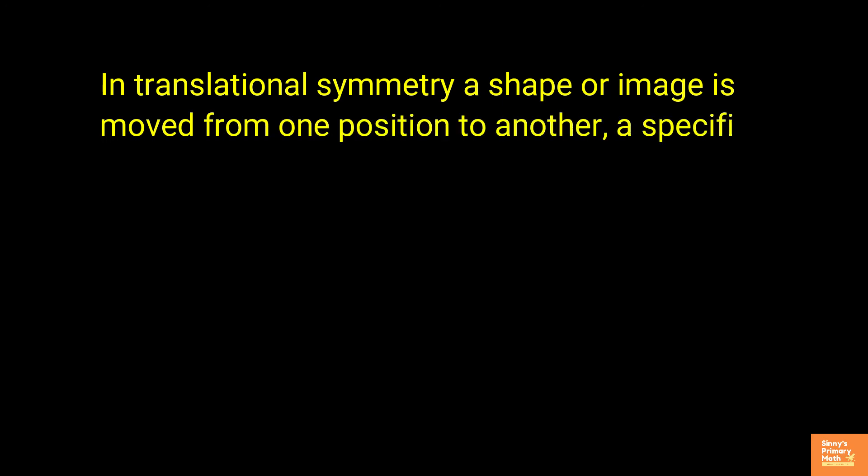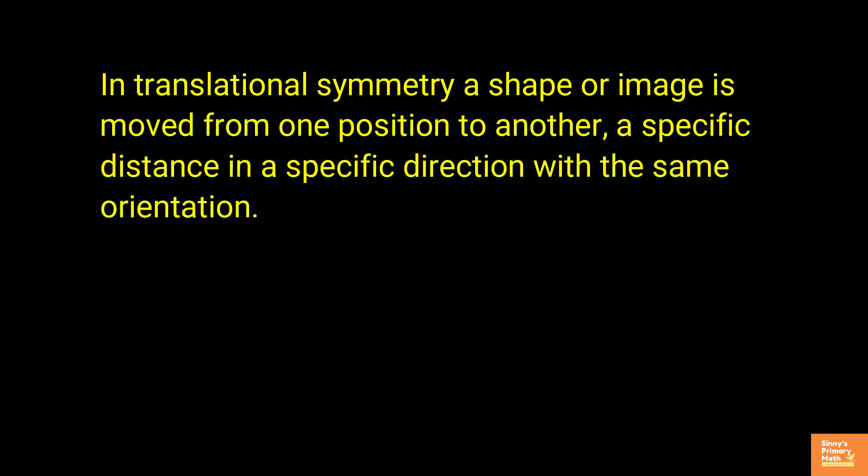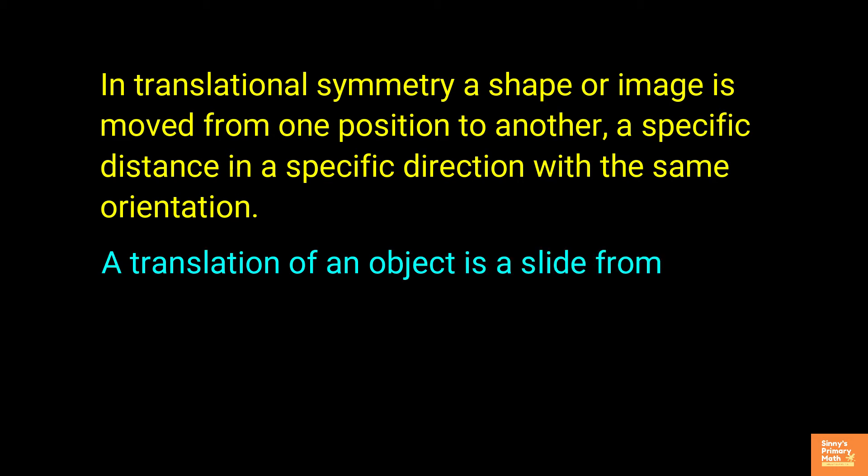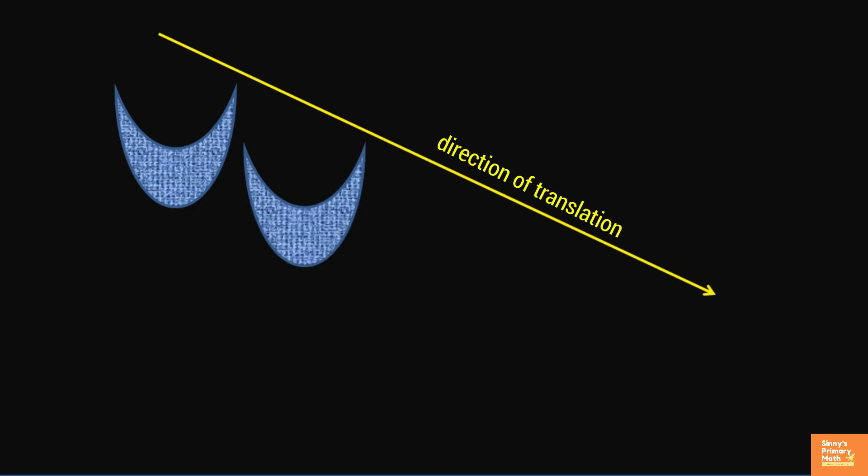In translational symmetry, a shape or image is moved from one position to another, a specific distance in a specific direction with the same orientation. In simple language, a translation of an object is a slide from one position to another. In other words, moving a copy of a shape or pattern in a specified direction and in a specified length about an axis.